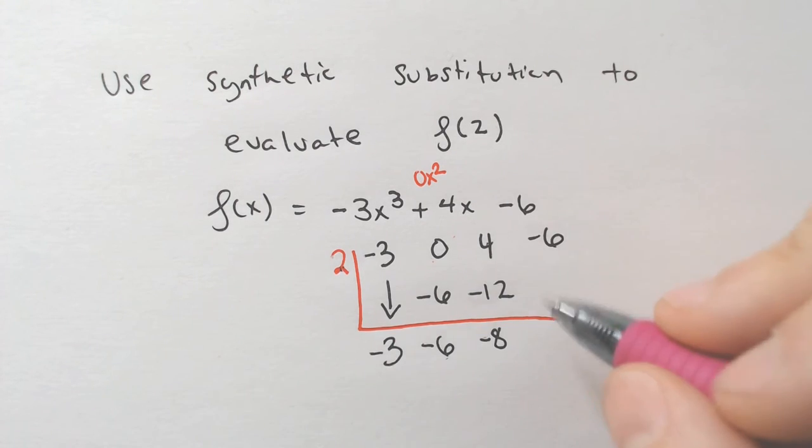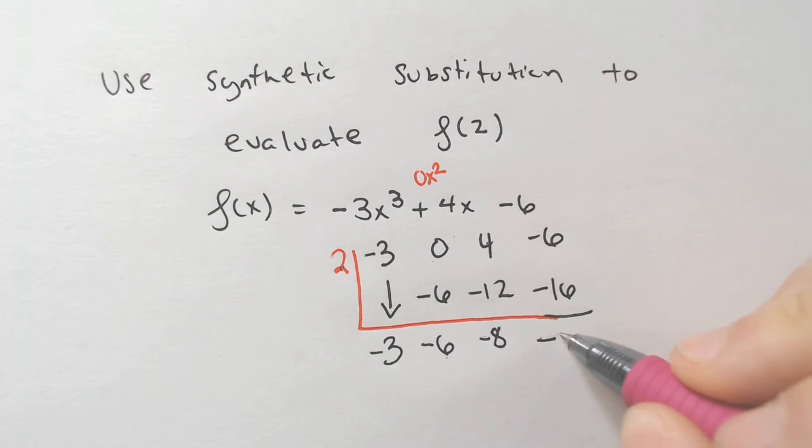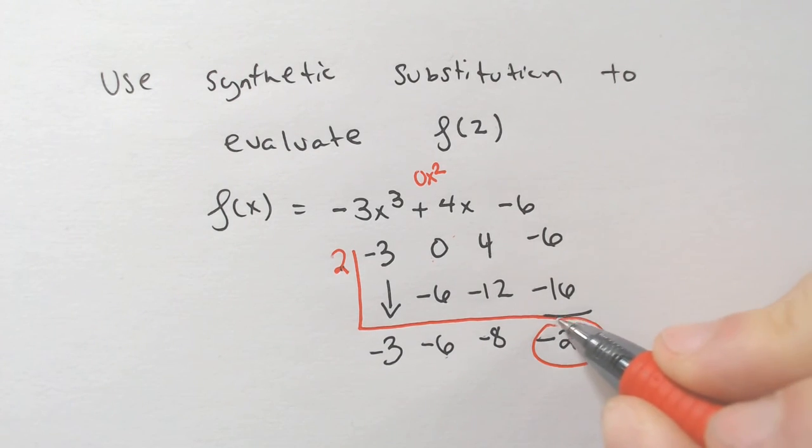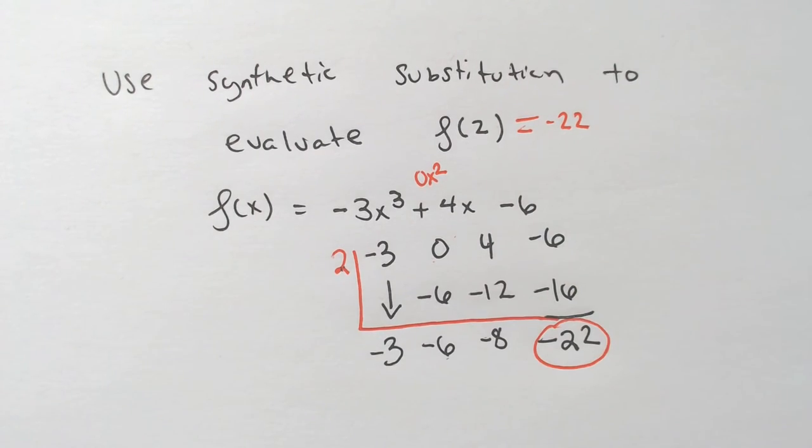Multiply 2 times negative 8, you get negative 16. And then add straight down, you're going to get negative 200. Not 200. Good grief. Negative 22. Not even close. And that remainder is your answer. Okay?